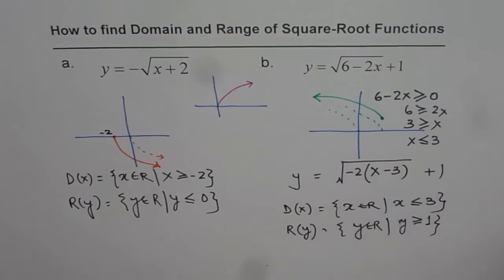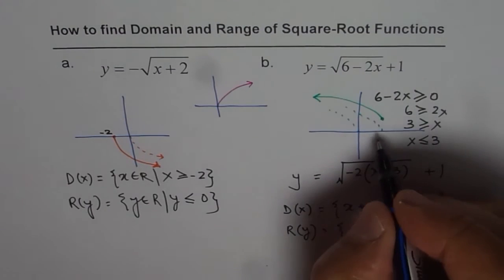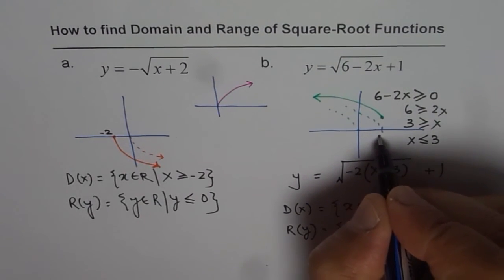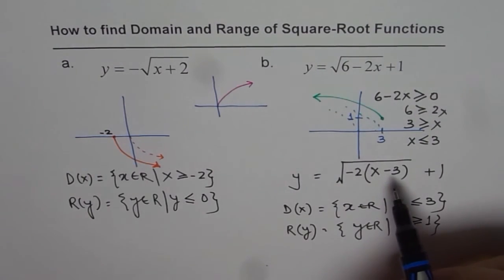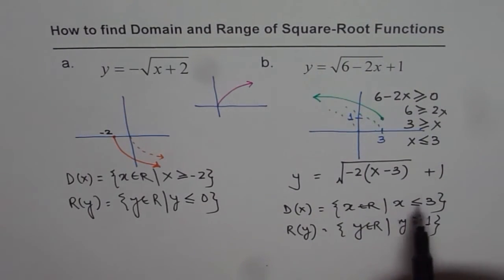And this point, we moved 3 units to the right, so x value is 3. And we moved 1 unit up. And so we can clearly see that the domain is less than equal to 3 and range is greater than equal to 1. So that's the way we can do it.